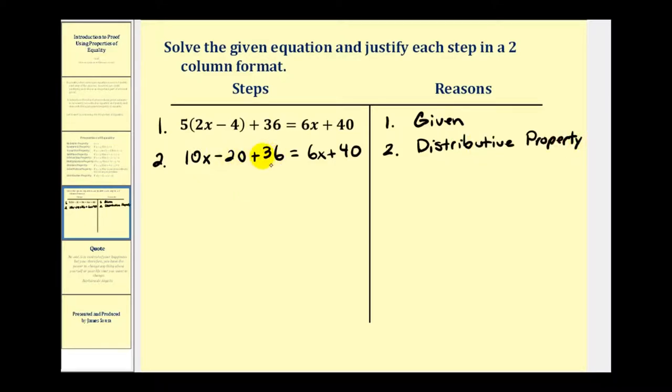The next step would probably be to combine these like terms here. So let's go ahead and do that. That'll be step three. So we'll have 10x plus 16 equals 6x plus 40. And the justification or reason would be combining like terms.